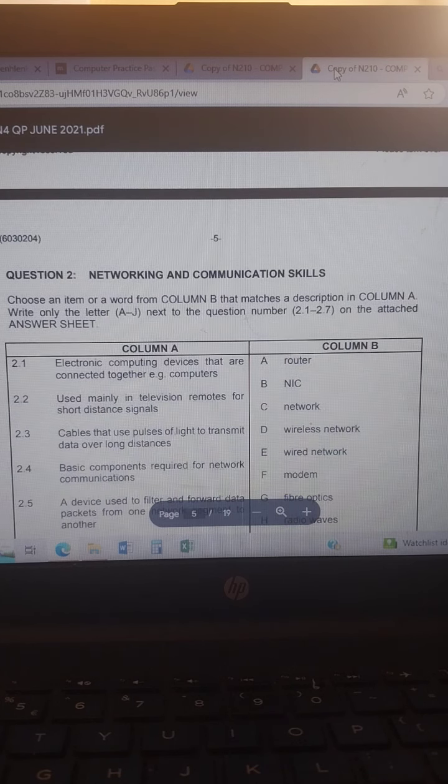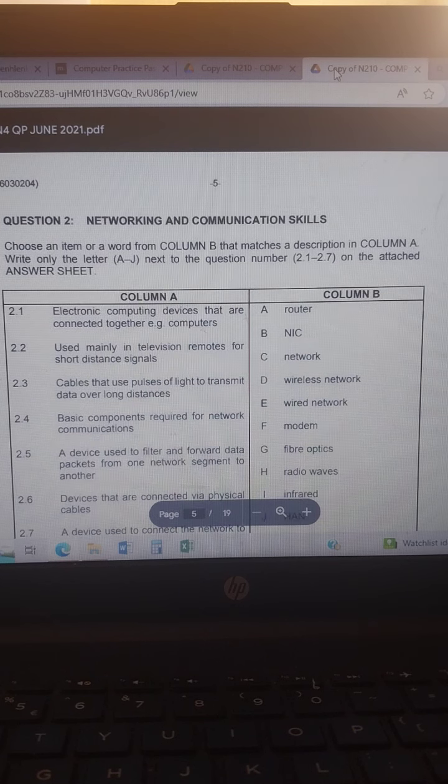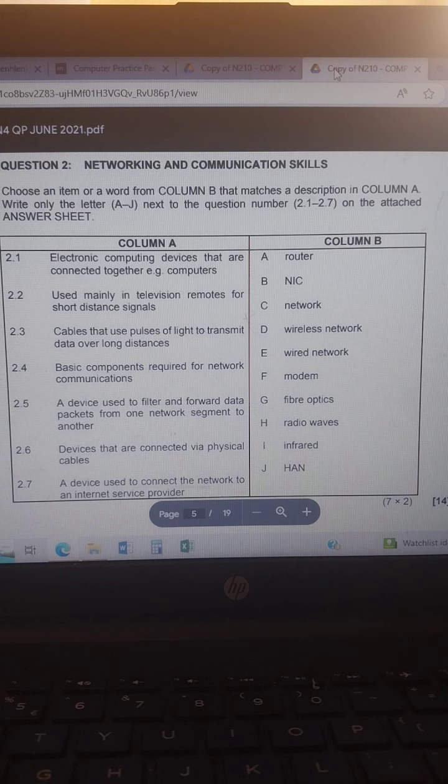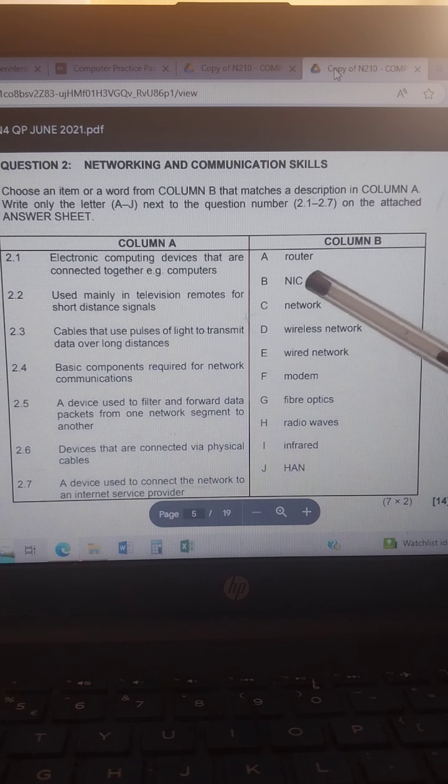And then we go to networking and communication skills. Networking and communication skills is choosing an item or a word that matches description in column A. Write on the letters. Number one says electronic computing devices that are connected together.